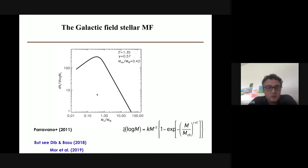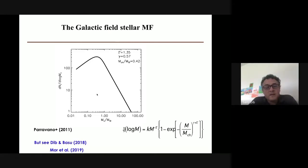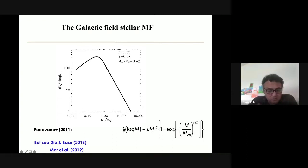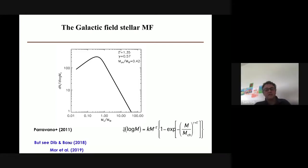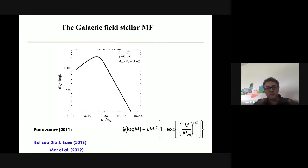More recent work by Roger Mor from the University of Barcelona revisits the IMF using Gaia stellar kinematics and APOGEE chemical enrichment data, compared with the Besançon model. He finds a shallower slope at both the high-mass and low-mass ends. We published a paper one year earlier arguing for such a scenario based on cluster-to-cluster variations: when variations exist, the composite galaxy-integrated IMF is not just a pile-up of identical IMFs but is broadened, producing shallower slopes at both ends.